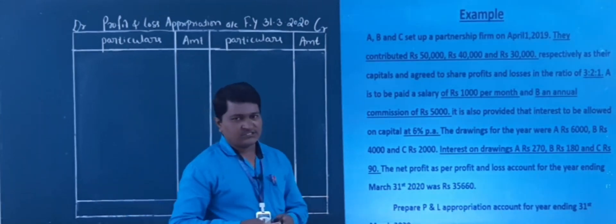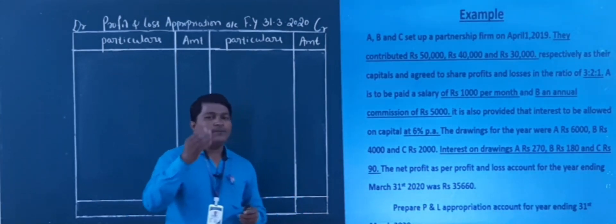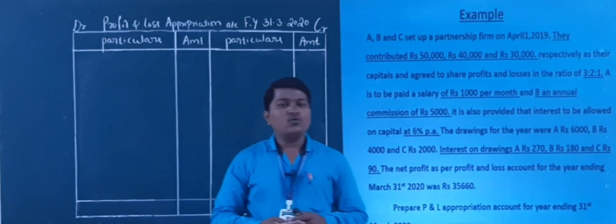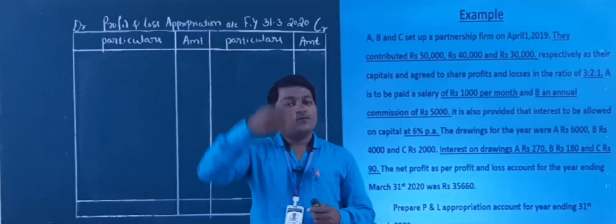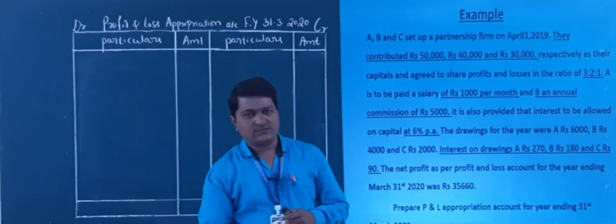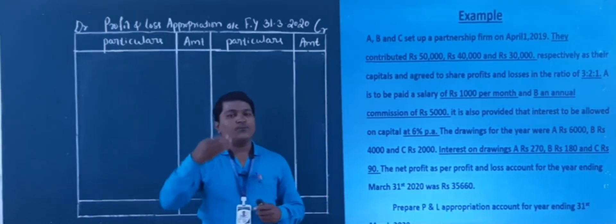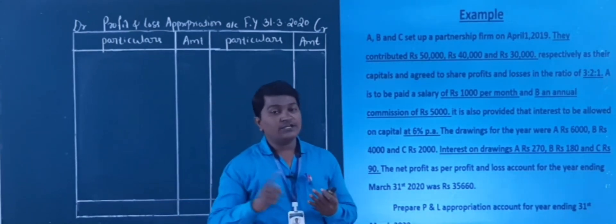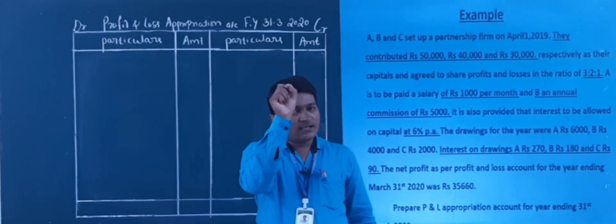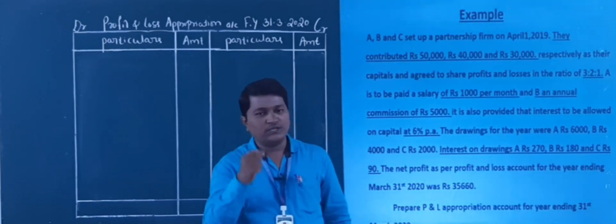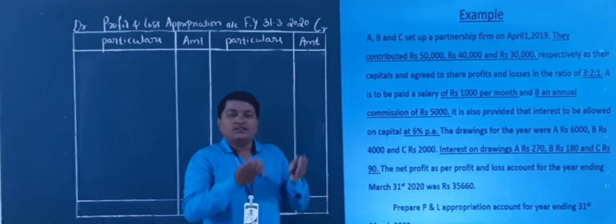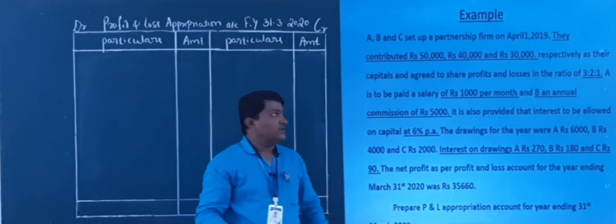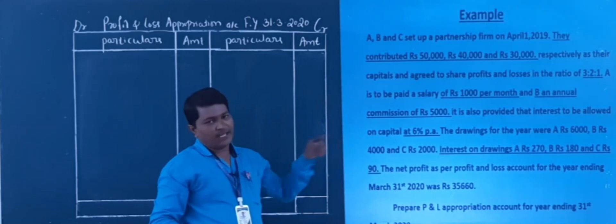So we go for an example of A, B and C. I will read the problem first. In the previous classes you solved problems that were given in point-wise form — all the adjustments given as points: interest on capital, salary to partner, commission, interest on drawing — listed as A, B, C or 1, 2, 3. But in this problem they have not mentioned any kind of points. They have given it directly in the form of a paragraph.